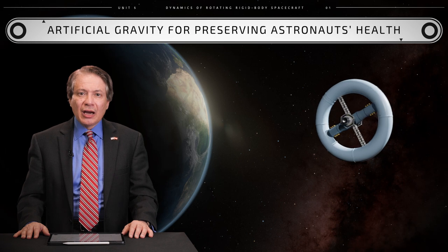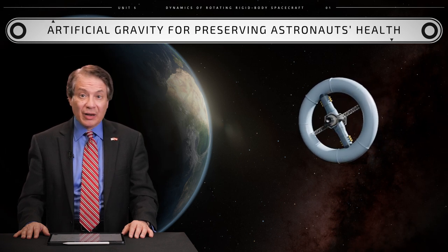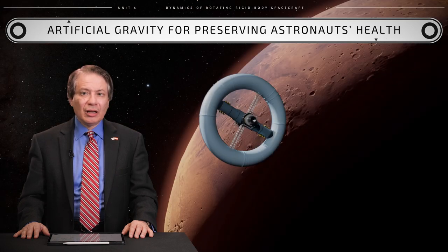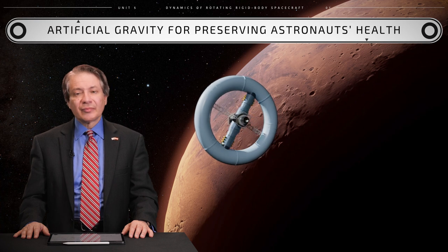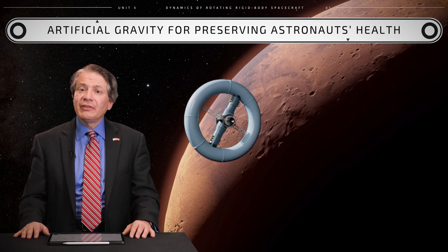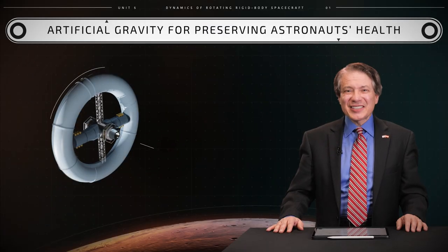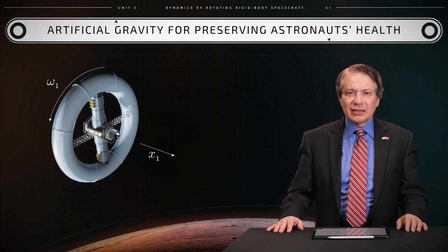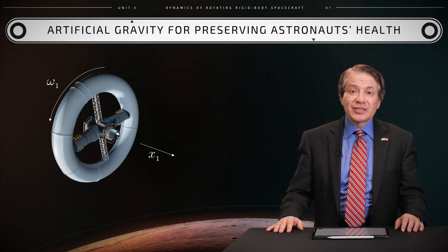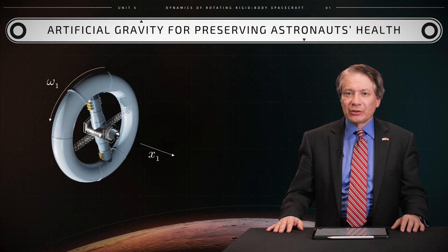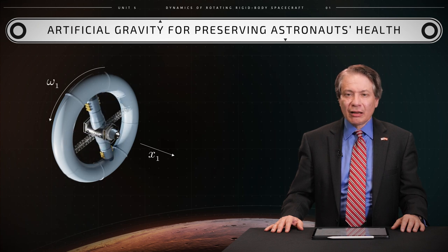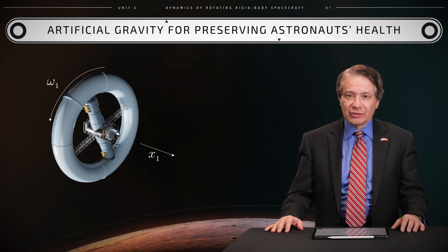When the members of a spacecraft crew are exposed to weightlessness for months, they develop medical ailments in the form of loss of muscle and bone mass. To prevent these ailments, an artificial gravity environment should be available in the spacecraft. This is achieved by designing a spacecraft that features a torus. The torus may symmetrically spin on a central cylindrical module. It is the rotation of this torus that provides the needed health-preserving artificial gravity environment.